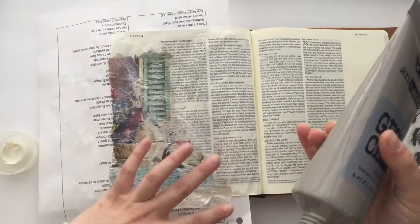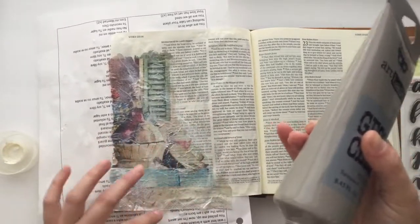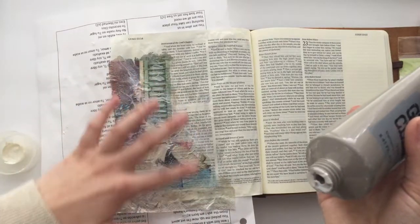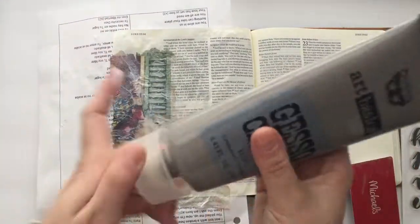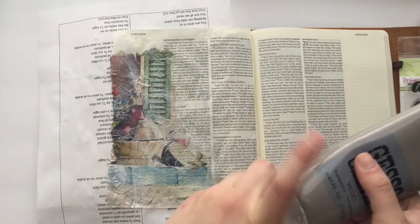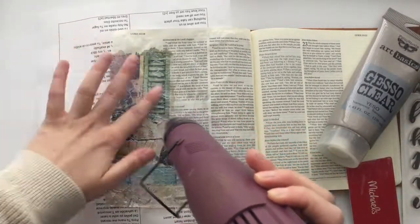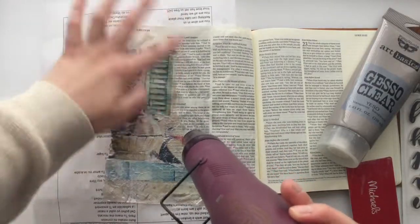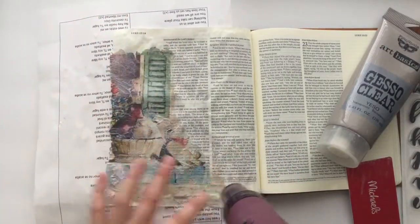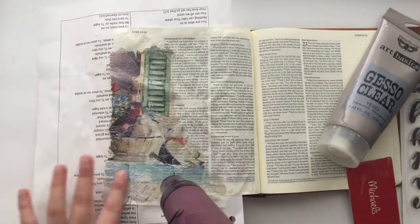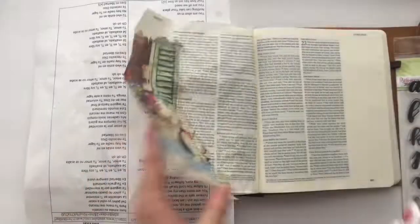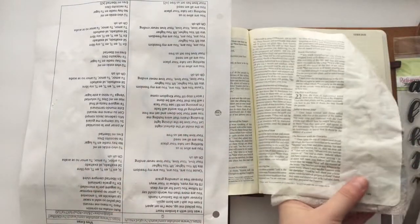I have some that have a cactus on them or a beautiful floral. And so using napkins is a great way if you don't feel like you're super artistic to have beautiful artwork in your Bible and just beautiful images to show more about what the Bible is teaching us.